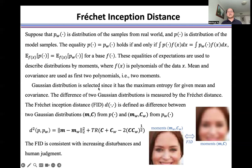Gaussian distribution is selected since it has maximum entropy for given mean and covariance. The difference of two Gaussian distributions is measured by the Fréchet distance. The Fréchet inception distance is defined by the difference between two Gaussian distributions, m, c from p and mw, cw from pw.